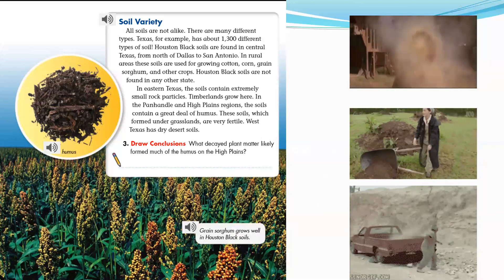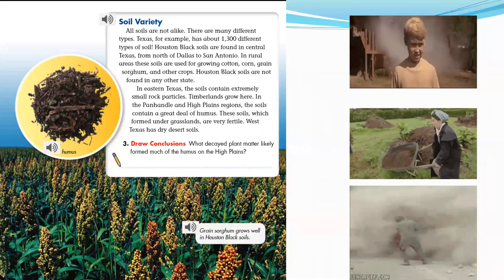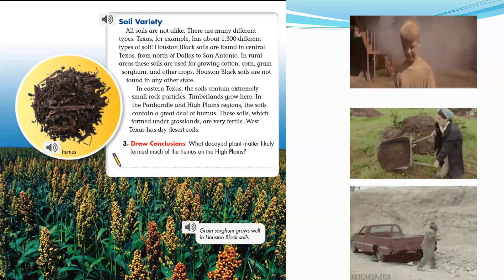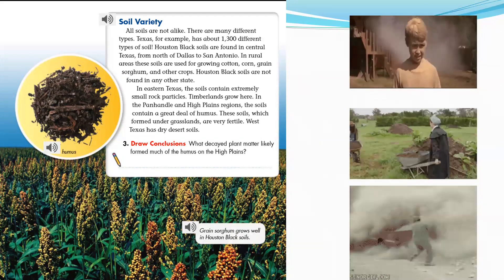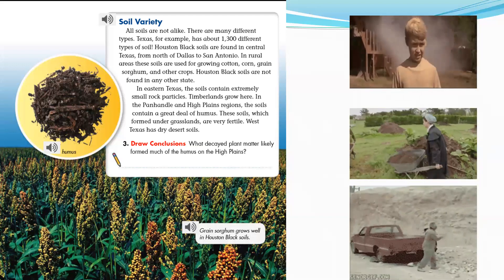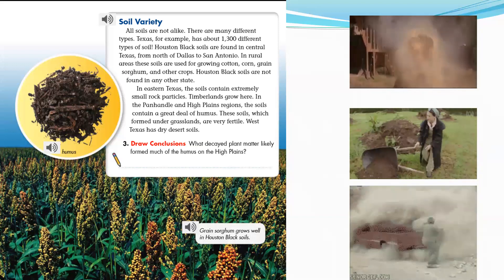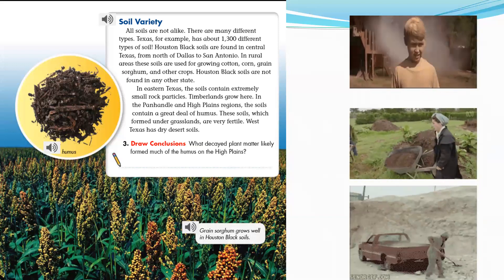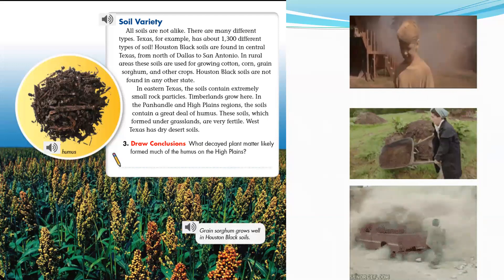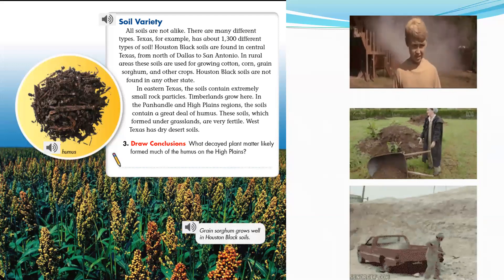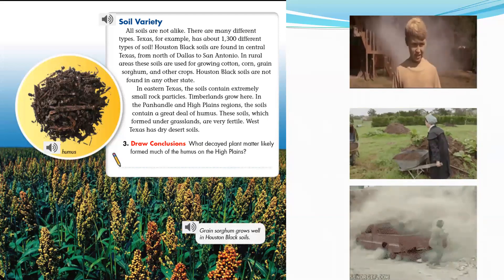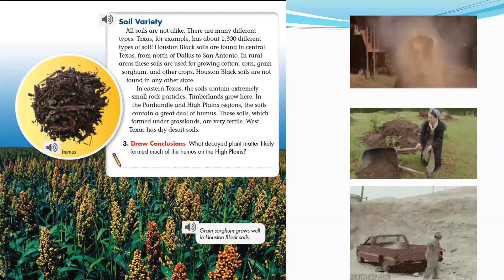We have a variety of soils — all soils are not alike, there are many different types. Texas, for example, has one thousand three hundred different types of soil. Houston black soils are found in central Texas from north of Dallas to San Antonio in rural areas. These soils are used for growing cotton, corn, grain, sorghum, and other crops. Houston black soils are not found in any other state.